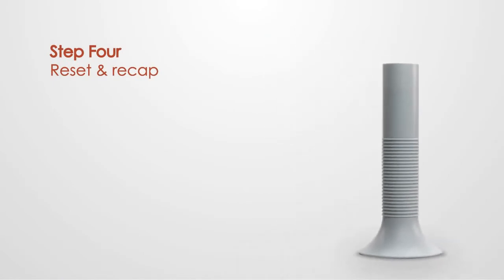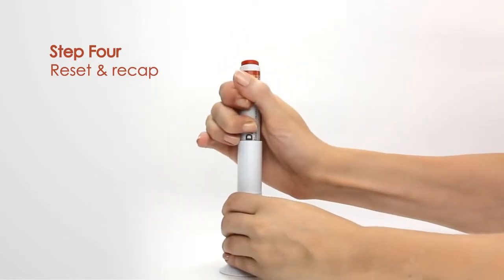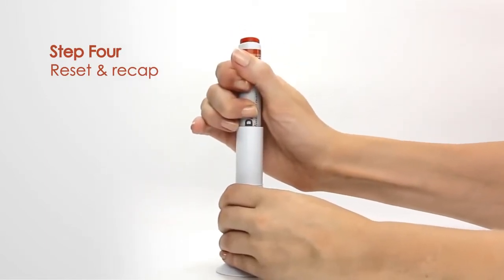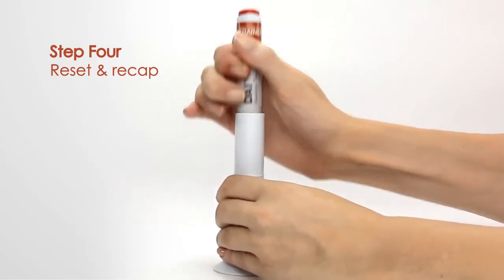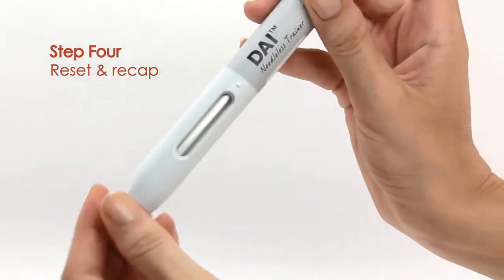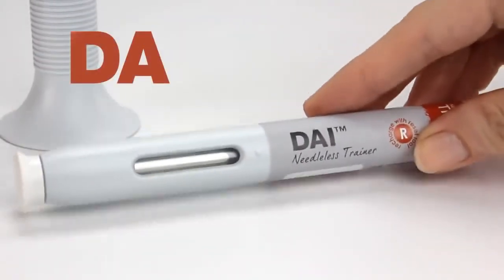Step 4: To reset the training device, use the reset tool that comes with your demo pack. Push the dye training unit into the open end of the reset tool until it comes to a stop. You will hear a click. Remove the device and recap.